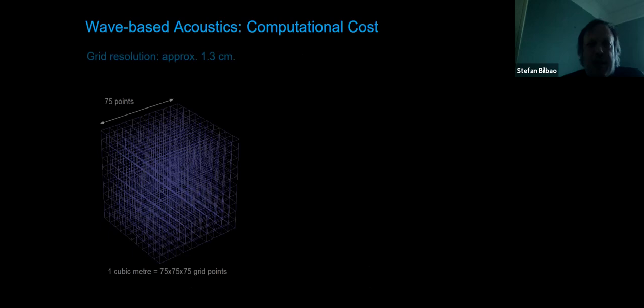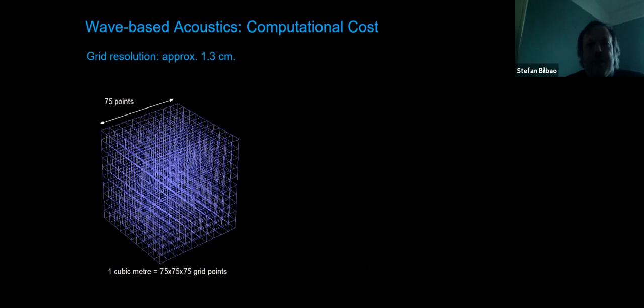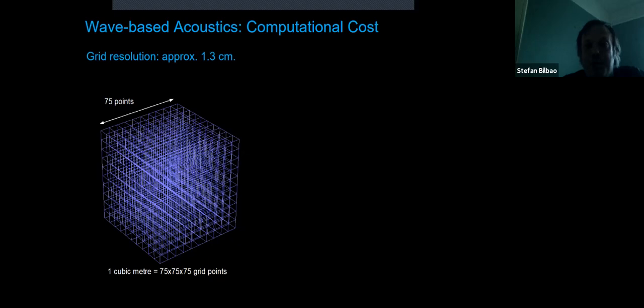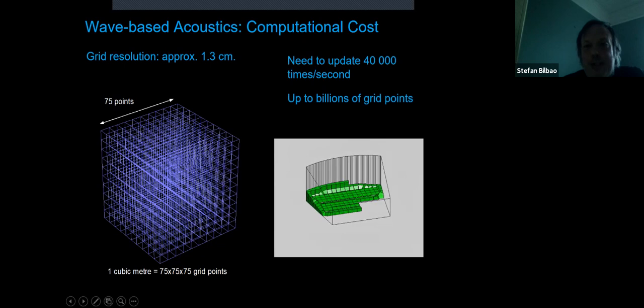The grid resolution needed is about one centimeter, which is the source of all computational difficulties. To emulate the full effect of a room up to 20 kHz, you need about 75 grid points per meter, meaning about half a million grid points per cubic meter. Concert halls may have upwards of 20,000 cubic meters of volume, meaning very large memory requirements, plus you need to update the field upwards of 40,000 times per second—a very large computational problem.